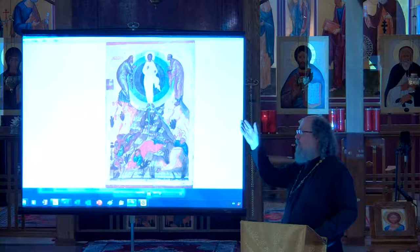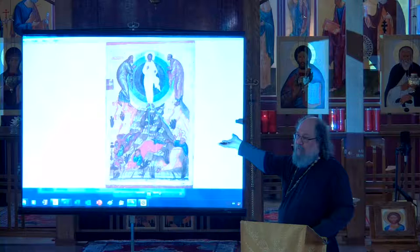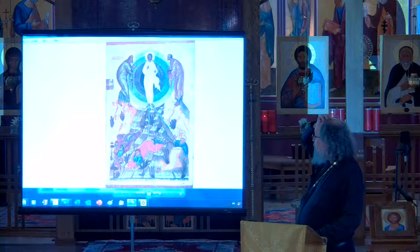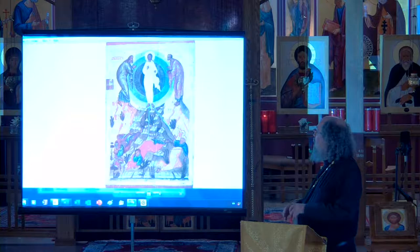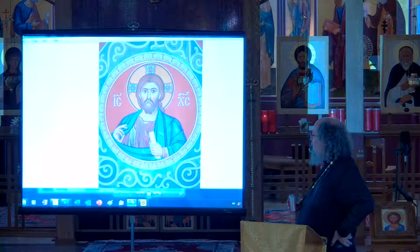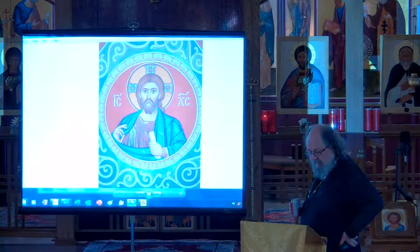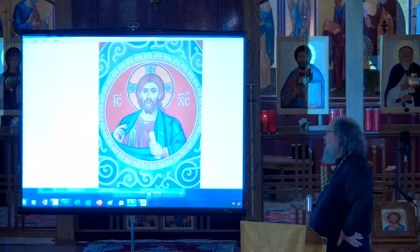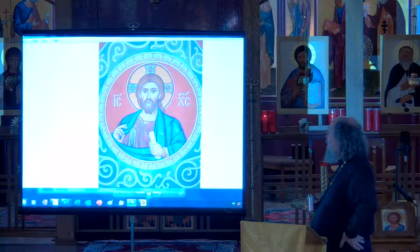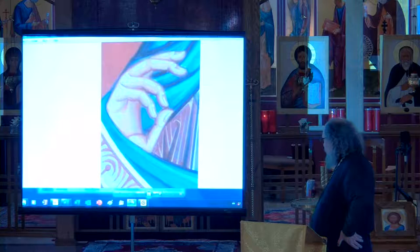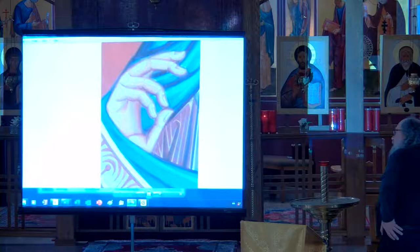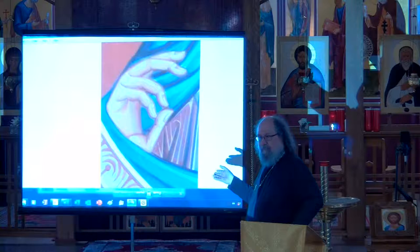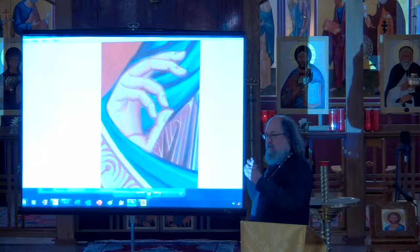This is the Transfiguration icon from the 14th century. You can see how Jesus's Sunday go-to-meeting clothes vary. This is an icon painted by Archimandrite Zenon in about 1990 — he decorated the trapeza of Valaam Monastery, so I got to see this every day when I was eating there. Notice the hand — this hand is actually a teaching gesture. There are different meanings to the hand positions.